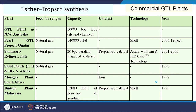Now we will see some commercial plants available in the world for liquid fuel production from natural gas. Plants are located in Australia, Qatar, Italy, South Africa, and Malaysia. These are very large-capacity plants using proprietary catalysts, some iron-based. Technology licensors include Sasol, Syntroleum, and GTL technology. The plants are not very old — started in the 1990s, with one starting around 2006.